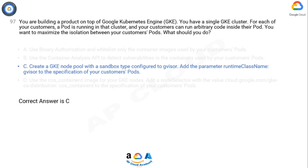Option D: Using the cos_containerd image for GKE nodes and adding a node selector with cloud.google.com/gke-os-distribution: cos_containerd in the pod specification helps ensure a specific container runtime for the nodes, but it doesn't directly address isolation between customers' pods. Maximizing isolation is best achieved by using a sandbox type like gVisor, which provides additional security and isolation features for running containers within the GKE cluster.